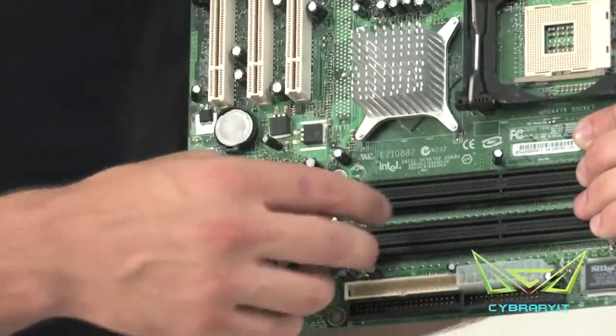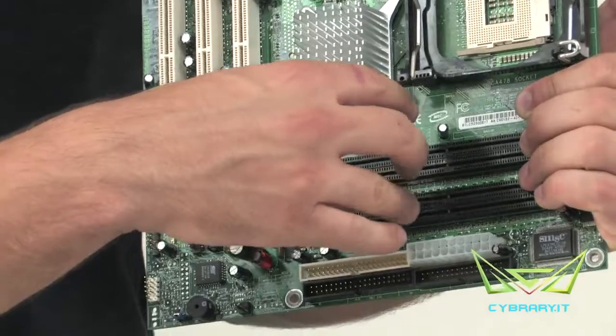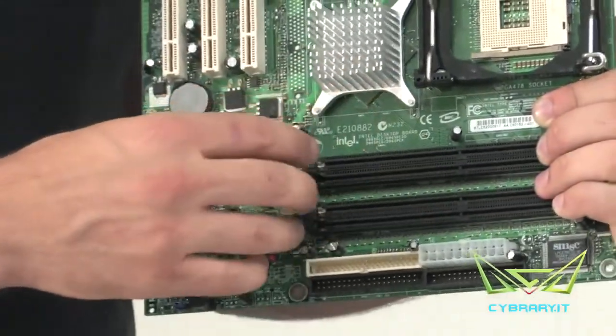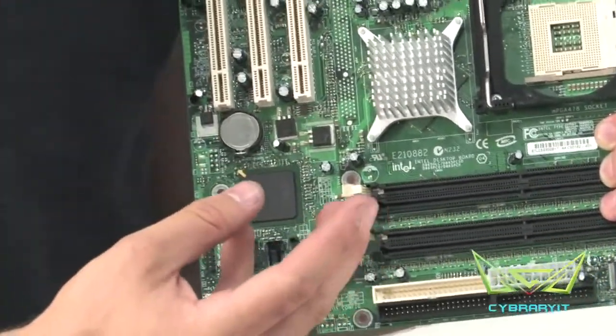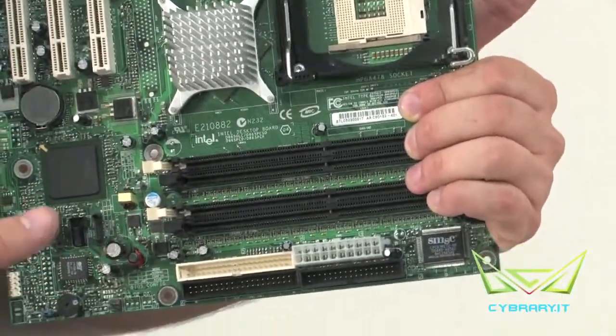When we want to install memory on this motherboard, we want to install memory in pairs. If we have a motherboard where it has two sections of three bank memory, then we want to install the memory in sticks of three. We want to make sure that we install the memory as best we can in groups, and that we match the groups up with the different banks.